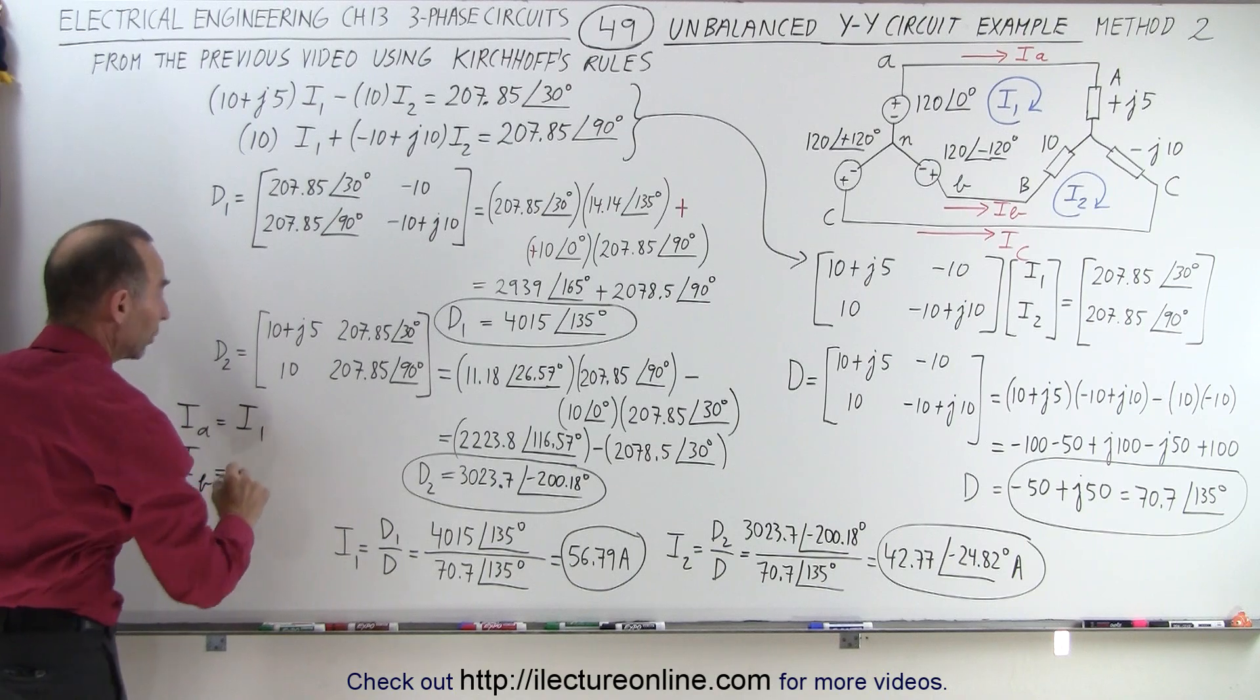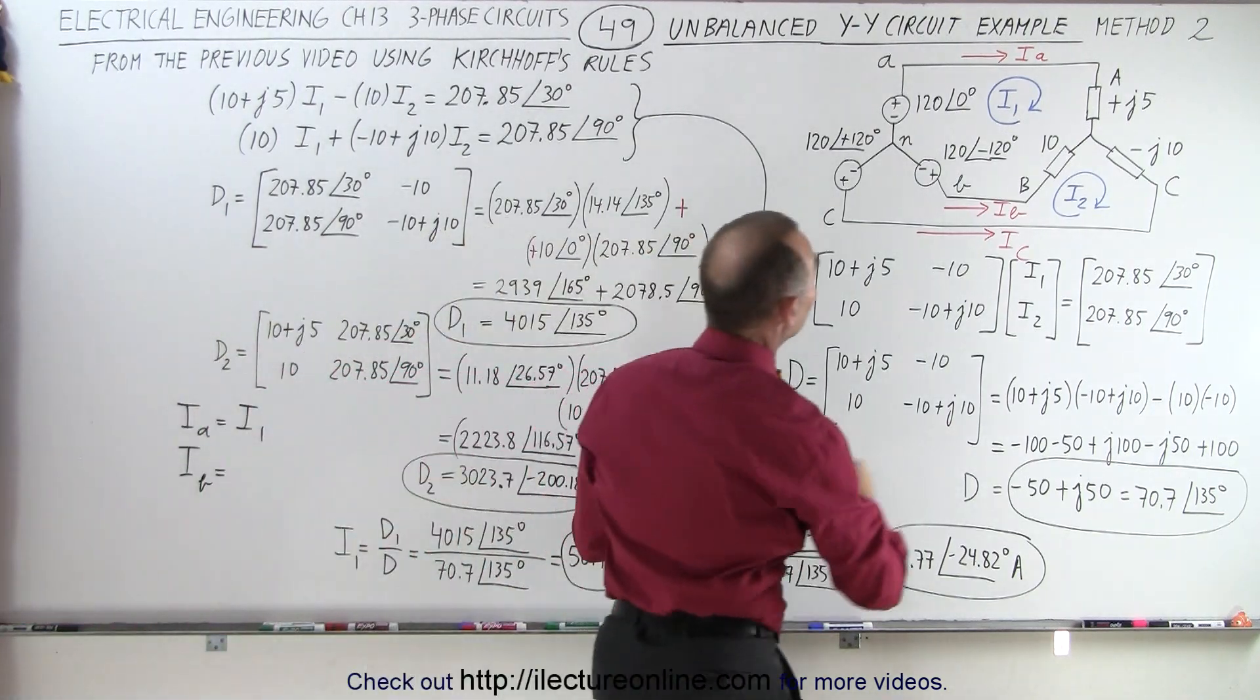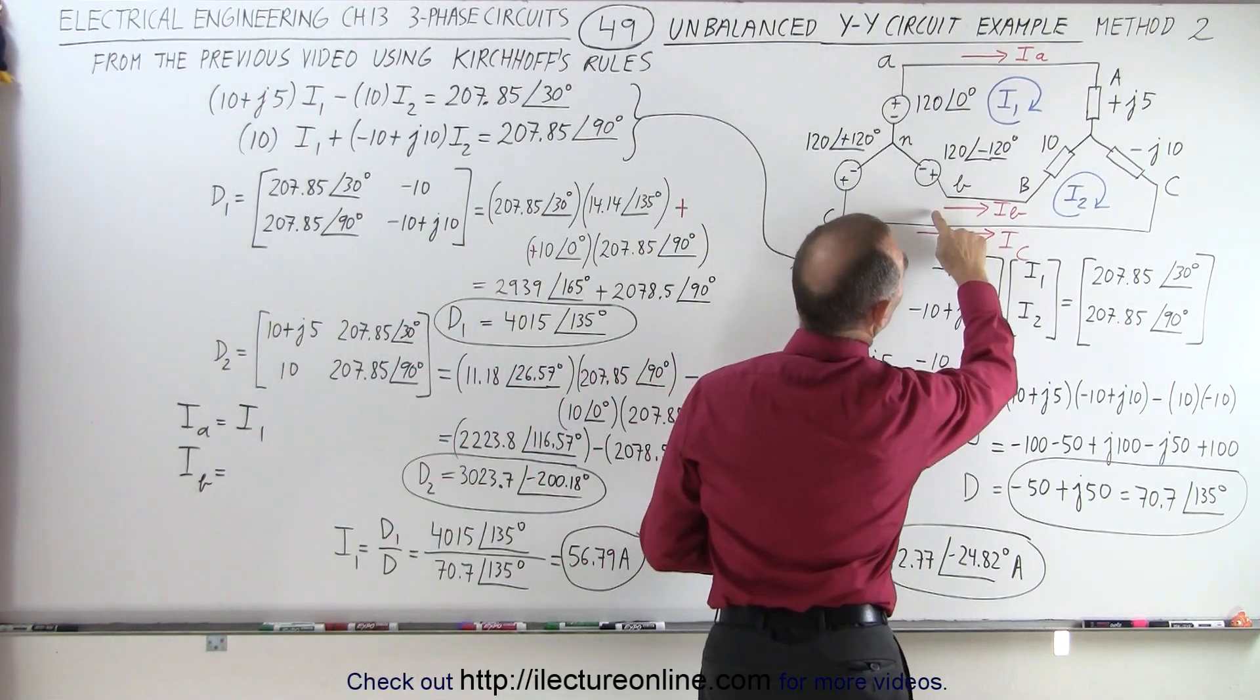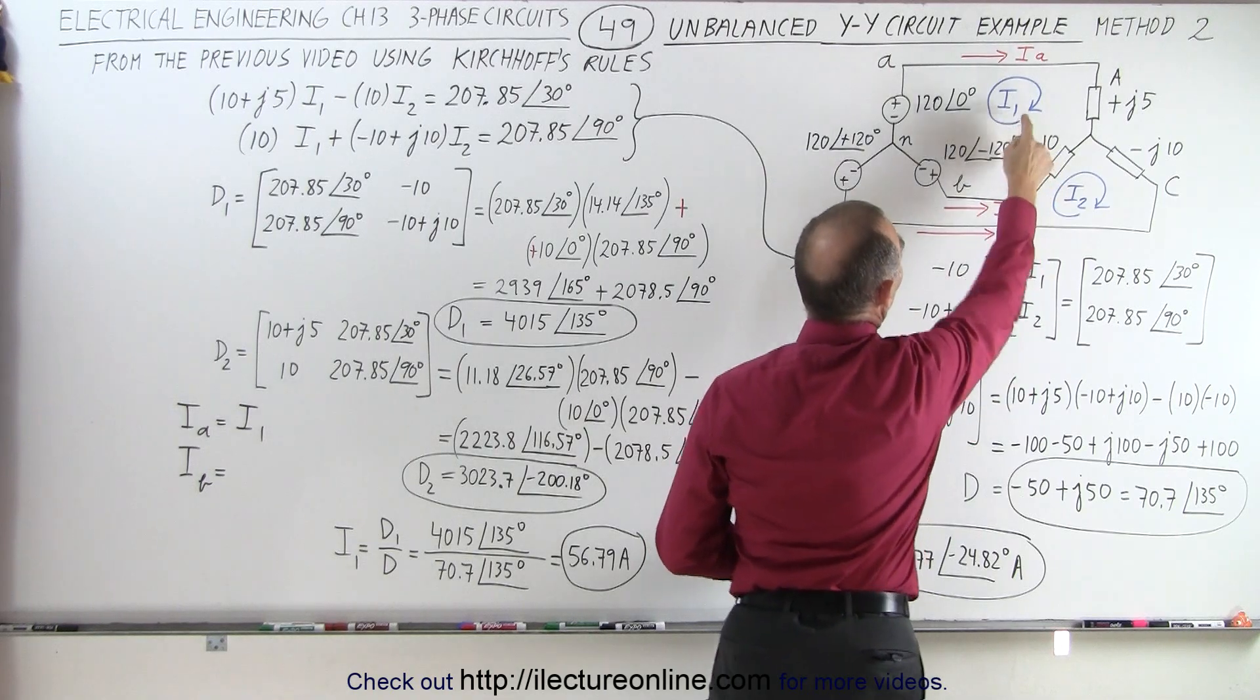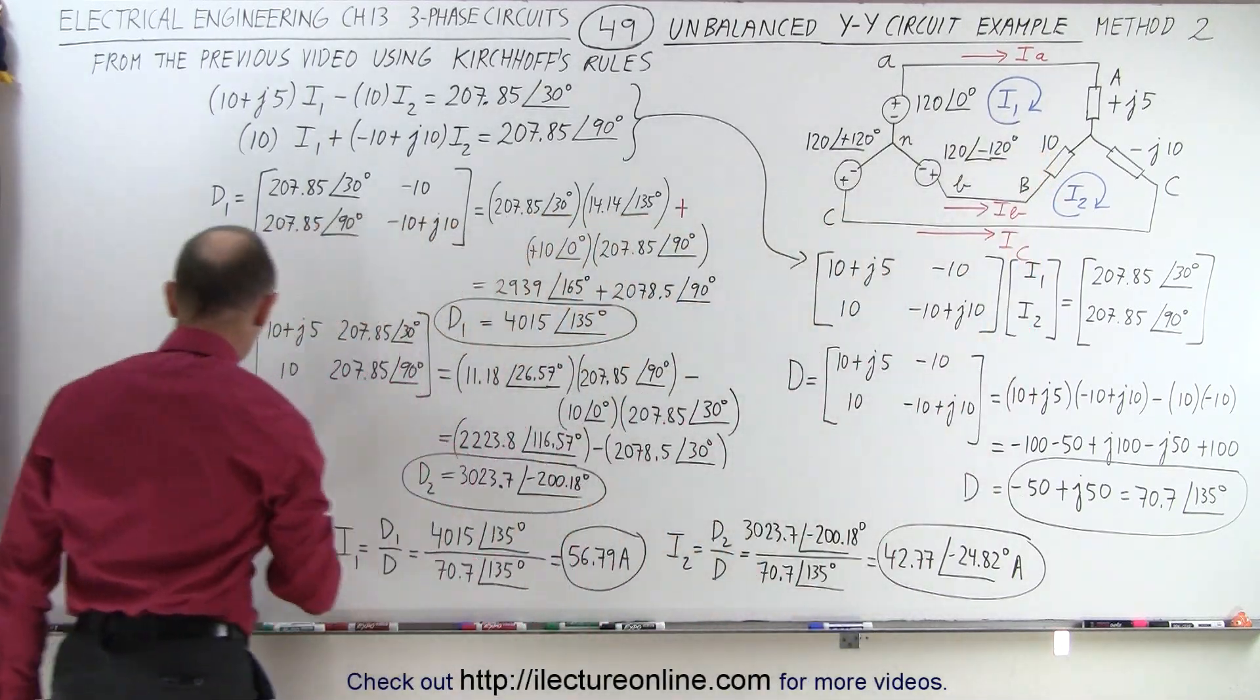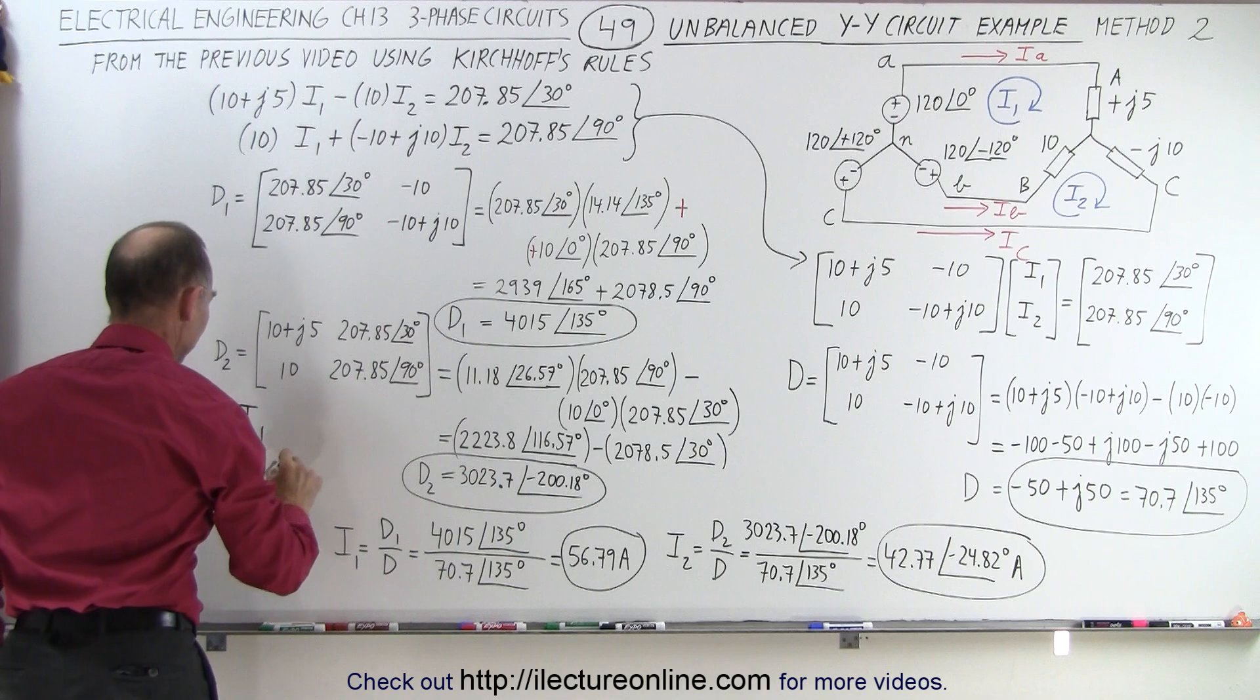Ib is equal to, notice, it's in the same direction as I2 but in the opposite direction of I1, so this becomes I2 minus I1.